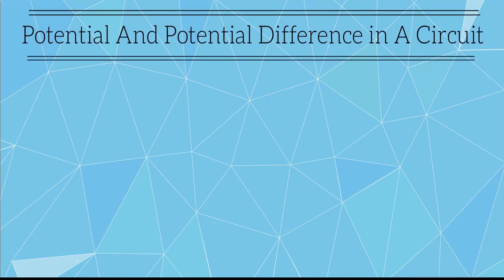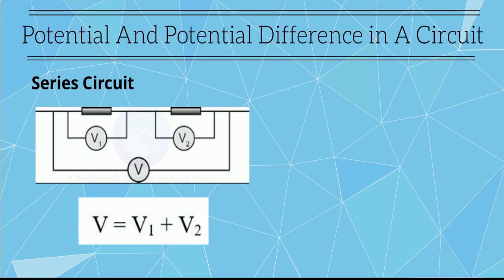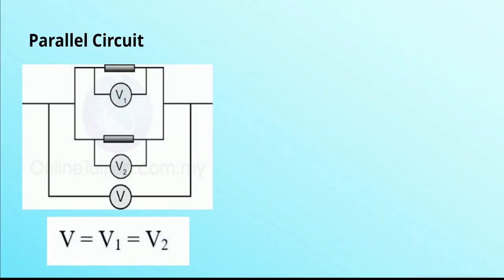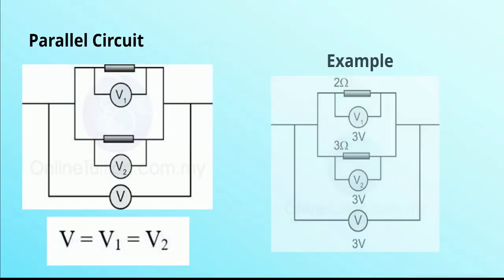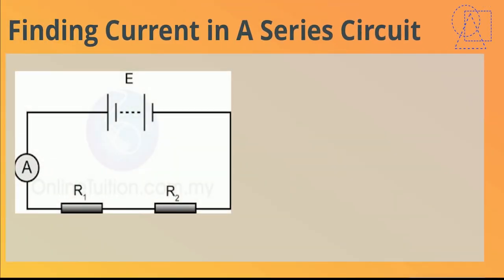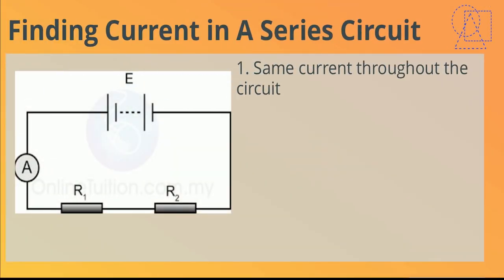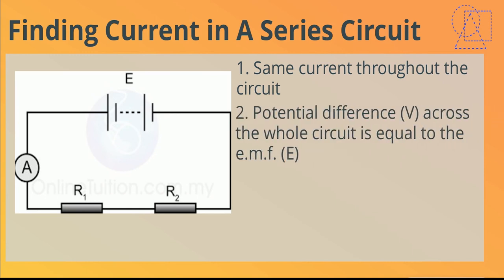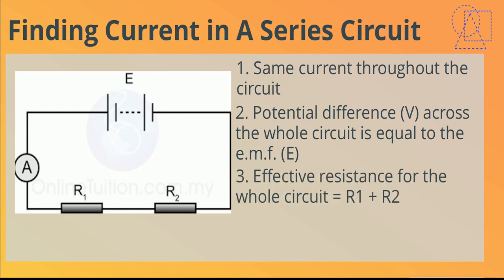In a series circuit, the sum of the potential difference across individual resistors between two points is equal to the potential difference across those two points. In a parallel circuit, the potential difference across all resistors is the same. In a series circuit, the current through each resistor equals the current through the whole circuit. The potential difference across the whole circuit is equal to the EMF if the internal resistance is ignored. Effective resistance for the whole circuit is equal to R1 plus R2. By Ohm's law, the following equation is formed.